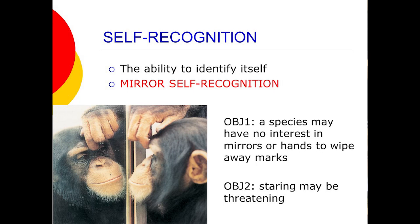If you're a fish, it's very hard to wipe something on your head. Fish researchers have figured out clever ways to test for this anyway, but it's a problem for the basic paradigm. Another objection is that for some animals, staring is threatening. You're not going to look at an image in the mirror because it might be interpreted as threatening — either you threatening them or them threatening you — so some animals don't engage in eye contact of any kind.